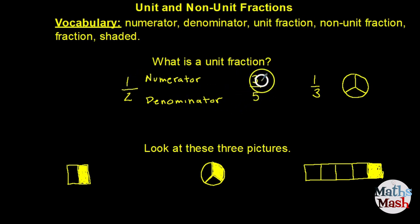A non-unit fraction can have any number as a numerator. This is an example of a unit fraction. This fraction is called one-third and this is what one-third might look like in a picture.